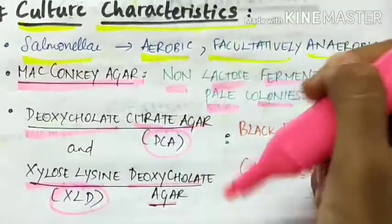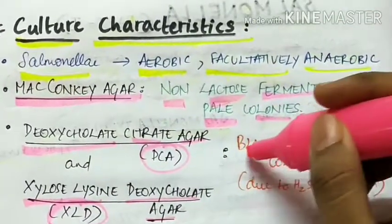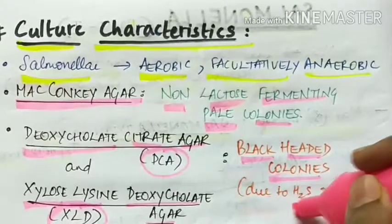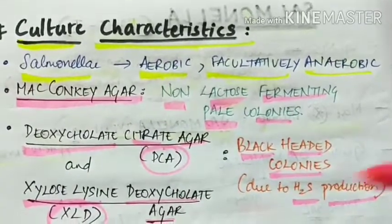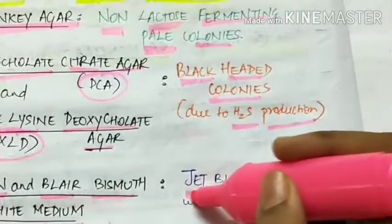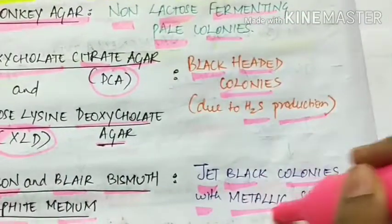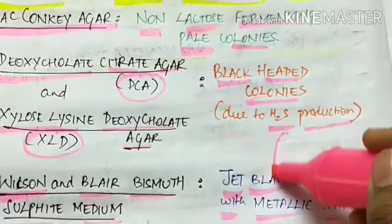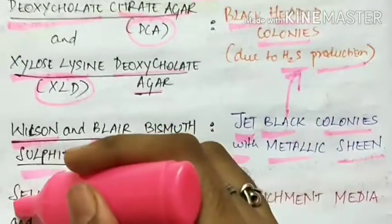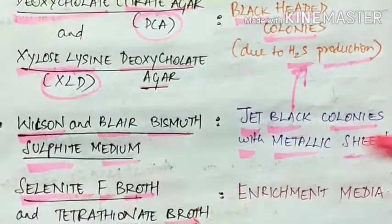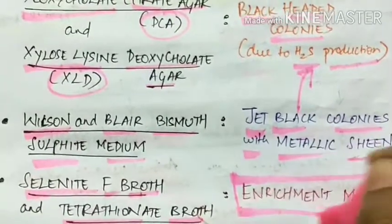in these two agars the Salmonella produces black-headed colonies. The black color is due to H2S production. In Wilson and Blair bismuth sulfite medium, the Salmonella produces jet black colonies with metallic sheen. Even here the black color is due to production of H2S. The selenite F broth and the tetrathionate broth are used as enrichment media for Salmonella.